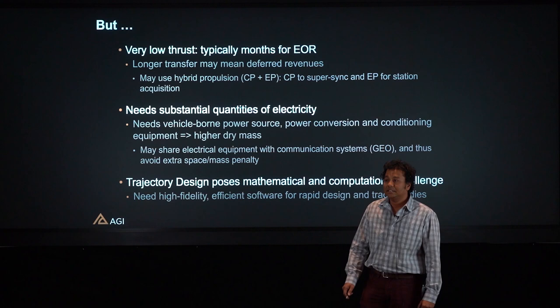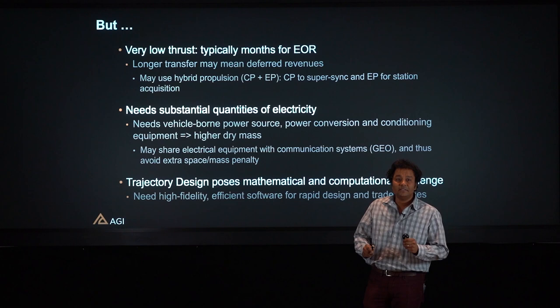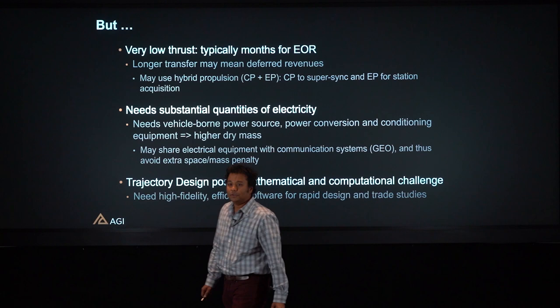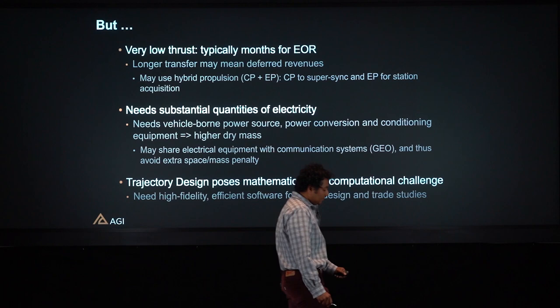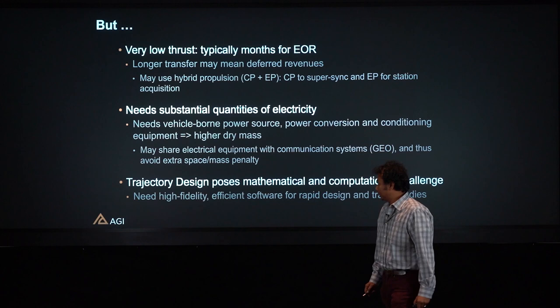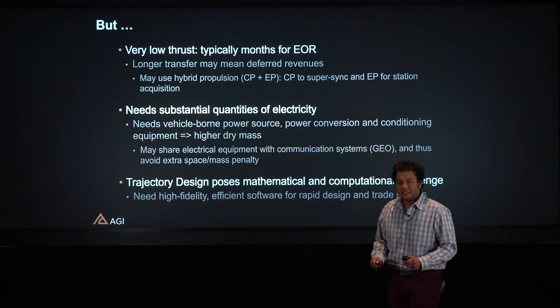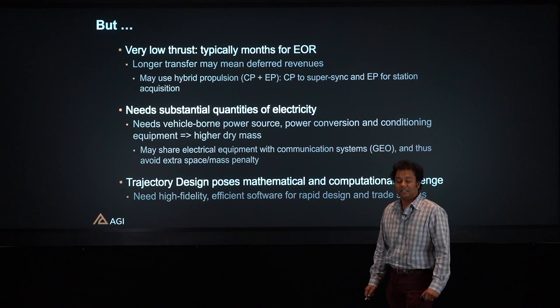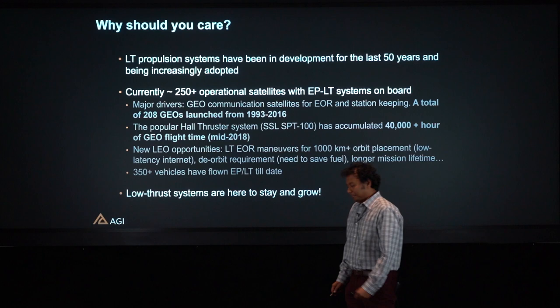A Low-Thrust propulsion system is not without its disadvantages. The thrust level is really low, which means longer transfer times are necessary and can translate to deferred revenues. One workaround is to use a hybrid propulsion system — combining chemical propulsion with electric propulsion. For example, use chemical propulsion to super-sync the trajectory for a LEO-to-GEO transfer, and then use electric propulsion to acquire the station. Another challenge that STK AstroGator directly addresses is that trajectory design with Low-Thrust systems poses a significant mathematical challenge.